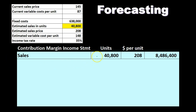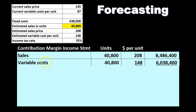If we consider our contribution margin income statement format for forecasting, we have the sales in units — 40,800 units projected to sell at $208 per unit. 40,800 times 208 gives us 8,486,400. Next, we have the variable costs. We take the same 40,800 units multiplied times the variable cost per unit of 148. 40,800 times 148 gives us 6,038,400.